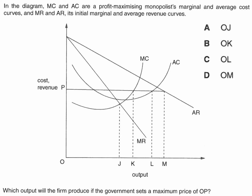So what do you think the correct answer is? Well, if the government imposes a price cap, the monopoly will change their output away from the usual profit maximising position. MC meets MR at output OJ, so it's not going to be OJ — that eliminates answer A. The correct answer is going to be B.